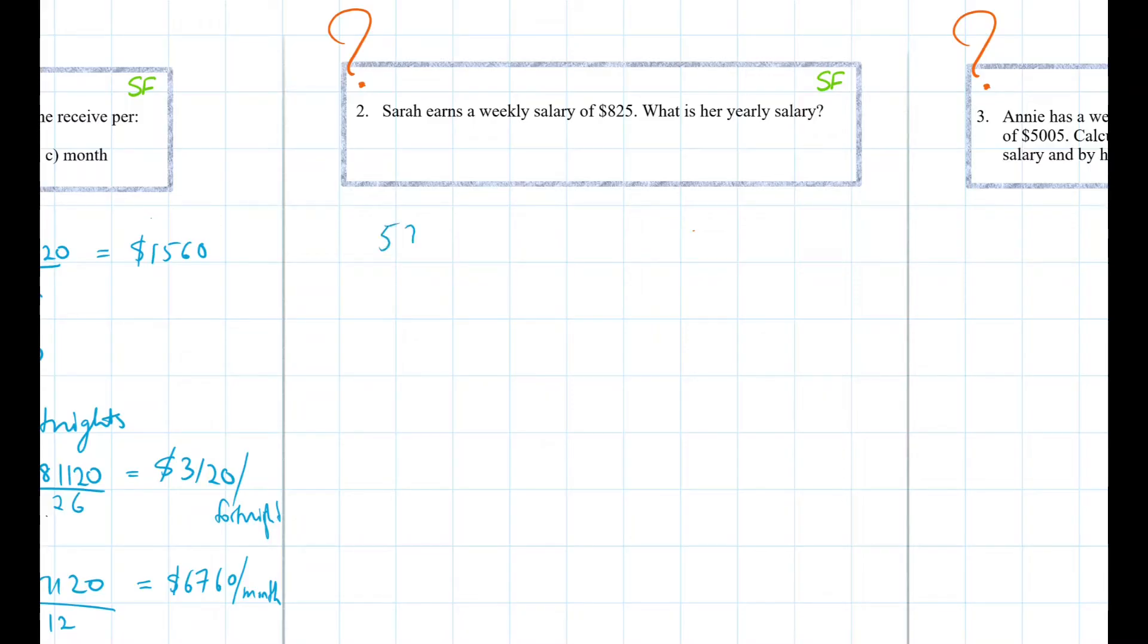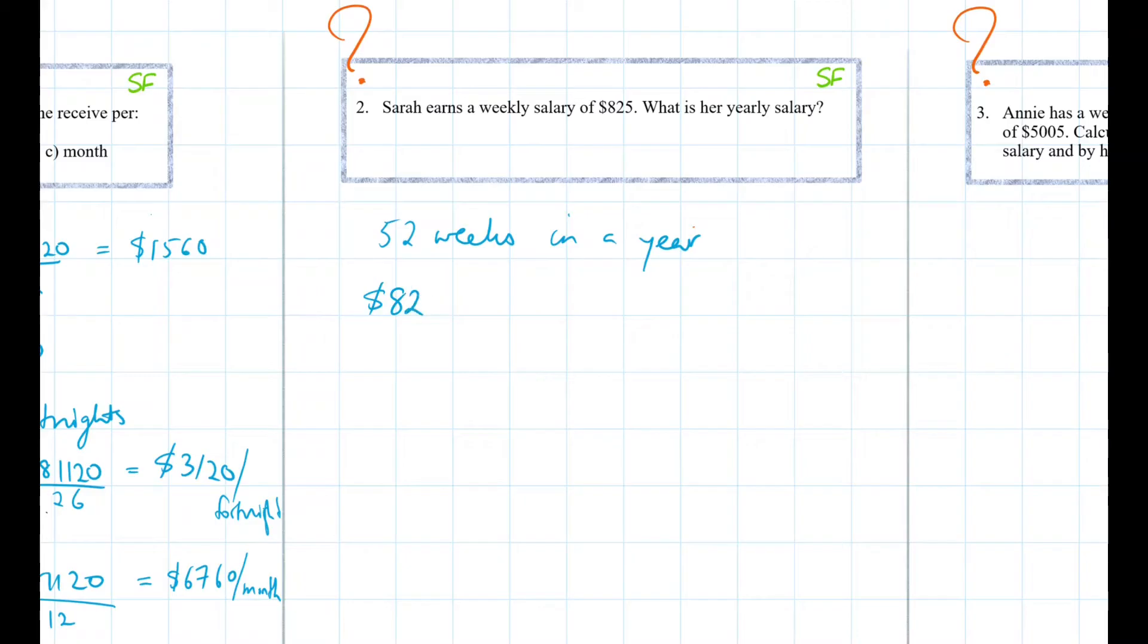there are 52 weeks in a year. So that means if she's getting a weekly salary of $825, she's going to be paid that 52 times in a year. So her yearly salary will be made up of $825 times 52. That gives us $42,900.